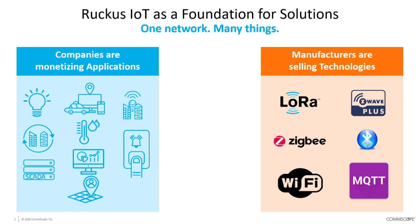One of the biggest problems with IoT is that you have different manufacturers selling technologies. There are different alliances, different companies that have invested in technologies like LoRa, Z-Wave, ZigBee, Bluetooth, and Wi-Fi, as well as software companies or software alliances working on protocols specifically designed for IoT like MQTT. On the other hand, you have companies trying to monetize and turn applications into revenue — simple things like voice activation, for examples like Amazon and Google, to large city applications where people are bringing in multiple technologies trying to manage cities at a much larger level, and everything in between.